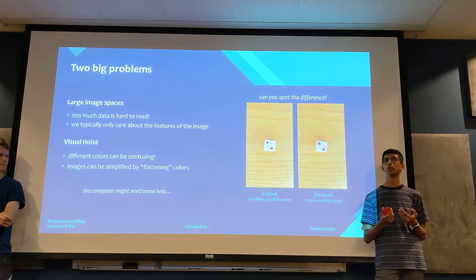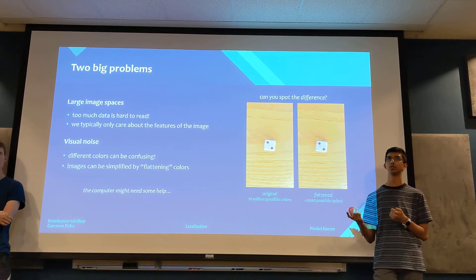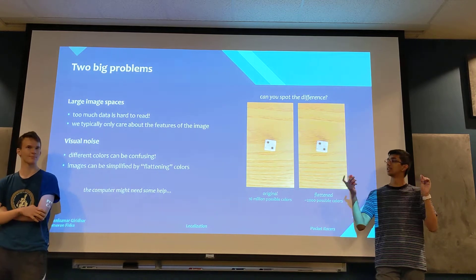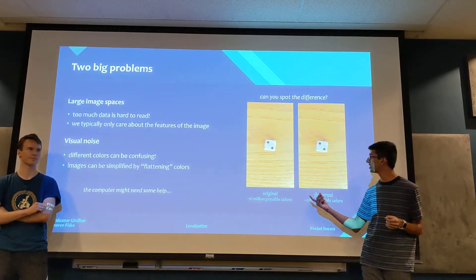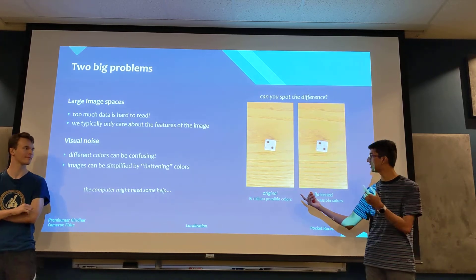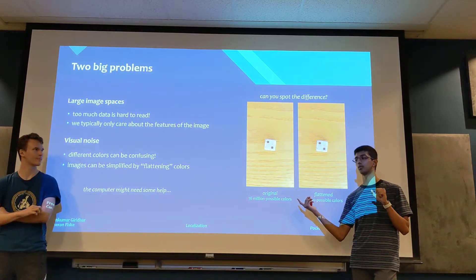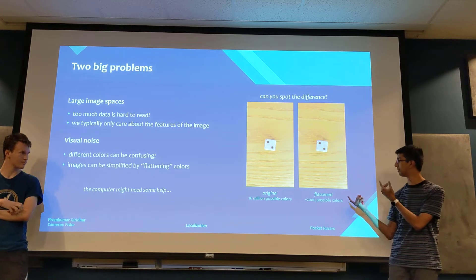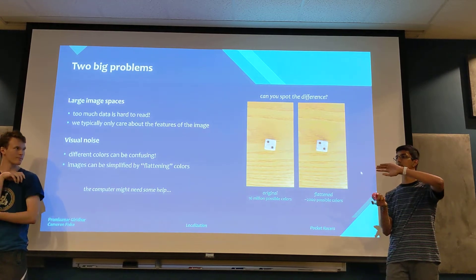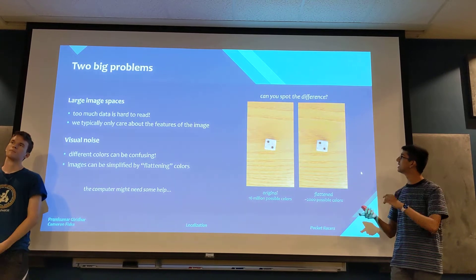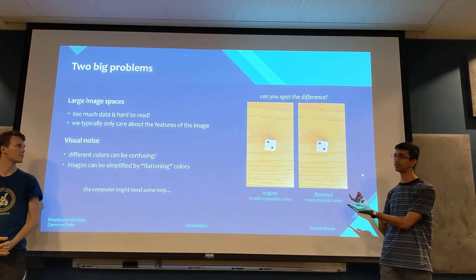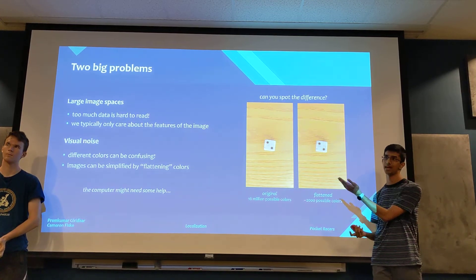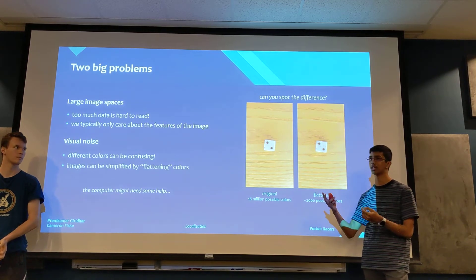The second problem is visual noise, which refers to the fact that different colors can be confusing to a computer. Images can be simplified by flattening the color space — basically taking the 16 million possible colors and consolidating them. Here's an example: we have the original image with 16 million possible colors. After flattening it down, there are only 2,000 different colors the computer has to process. There's not a significant visual difference, but the computer has a much easier time reading the simplified image.